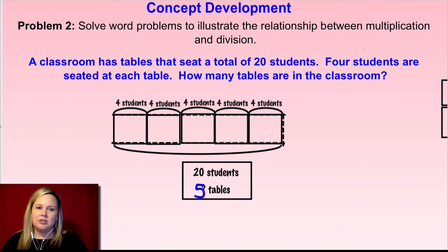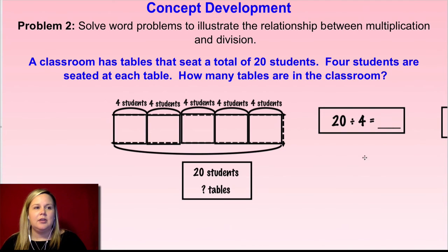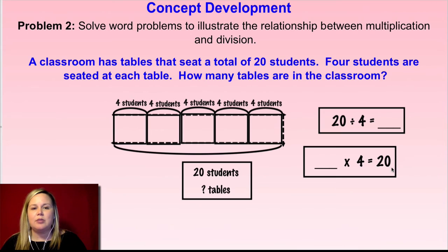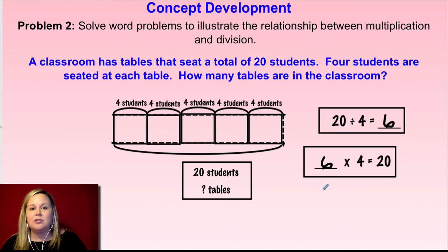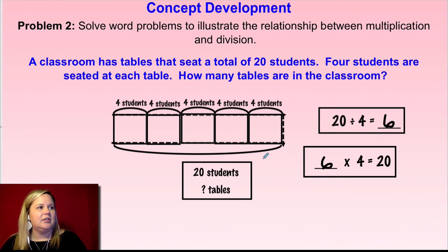I want to come up with a division equation and a multiplication equation that match this. So I'm going with 20 divided by 4 — because I had 20 as my total, divided by four students in each group — and that gave me five tables. Now for a multiplication equation that matches: blank times four equals 20. I know the size of the group is four, that's the second factor, so the first factor is the number of groups, which is also five. Look — you have the same facts: a 20 and a 20, a four and a four, a five and a five. That's how you know they're related, because they have the same factors. That's how multiplication and division are related.